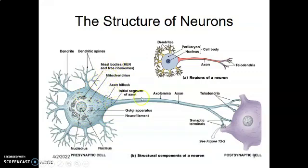The initial portion of the axon is the axon hillock. The axon is covered by the axolemma, and these are the synaptic terminals. Information travels in this direction. On the cell body we have dendrites.